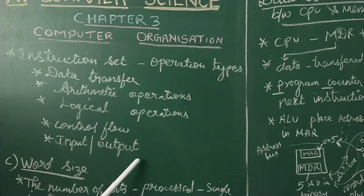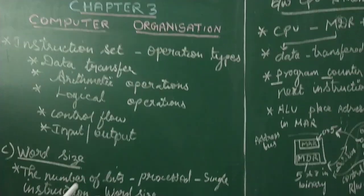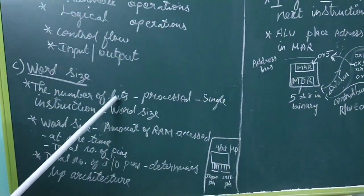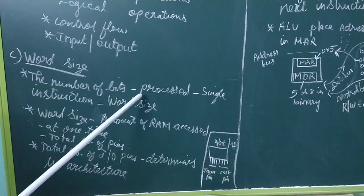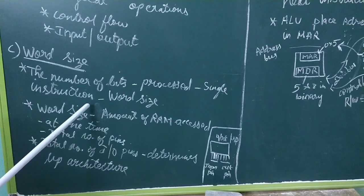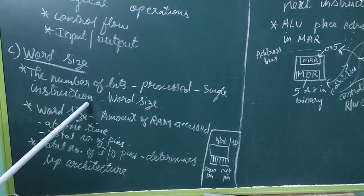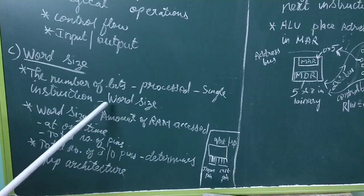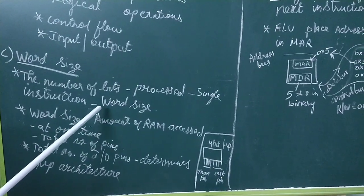Next is word size. Word size denotes the number of bits processed by a single instruction by the microprocessor. For example, a 4-bit microprocessor processes 4 bits of input and output at a time.